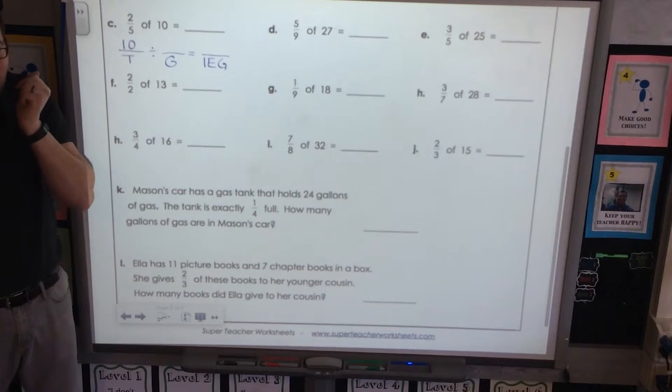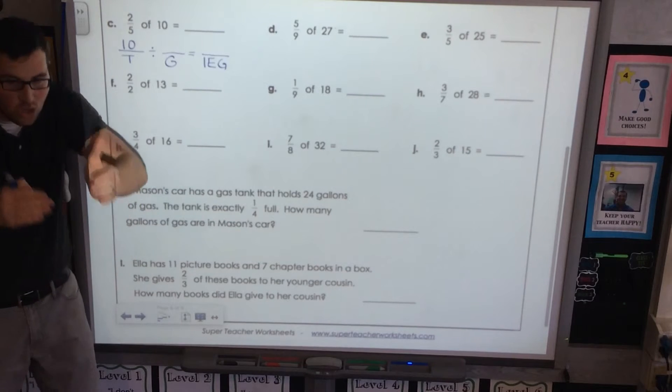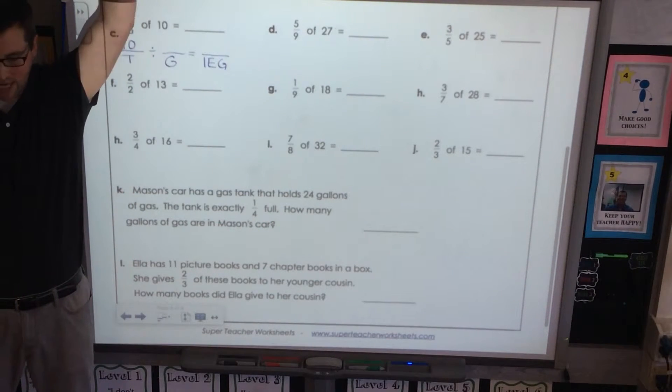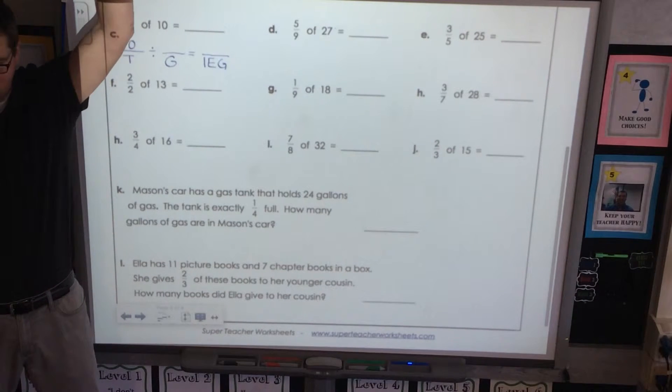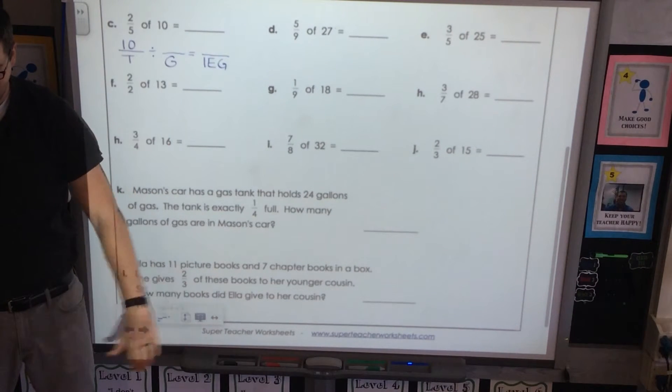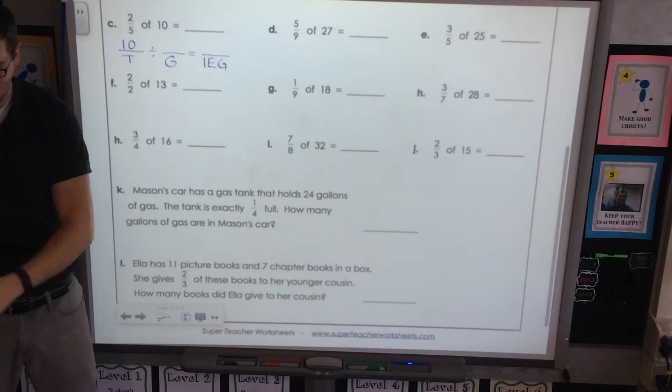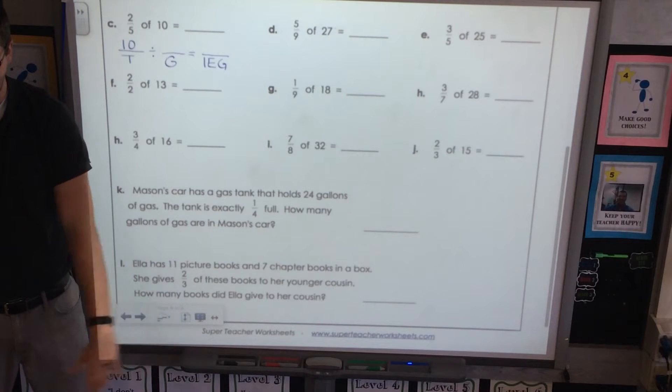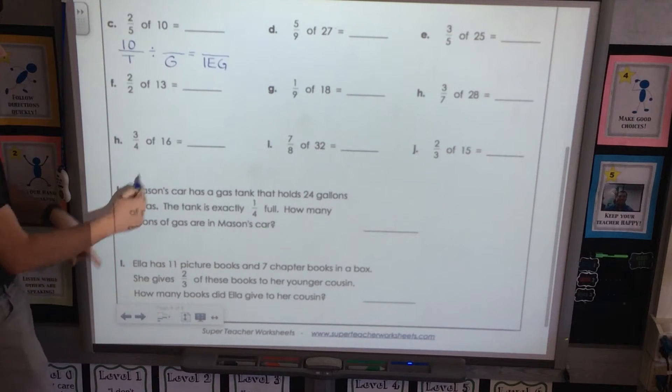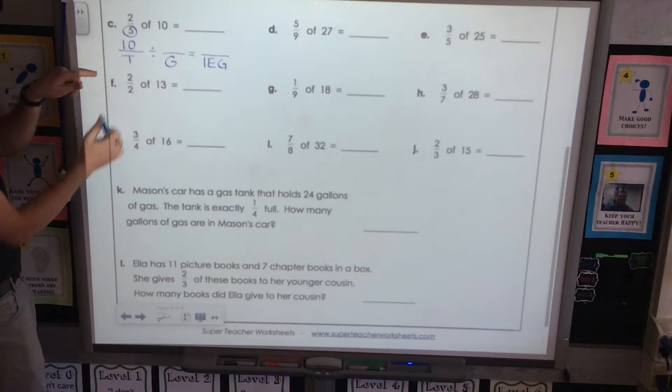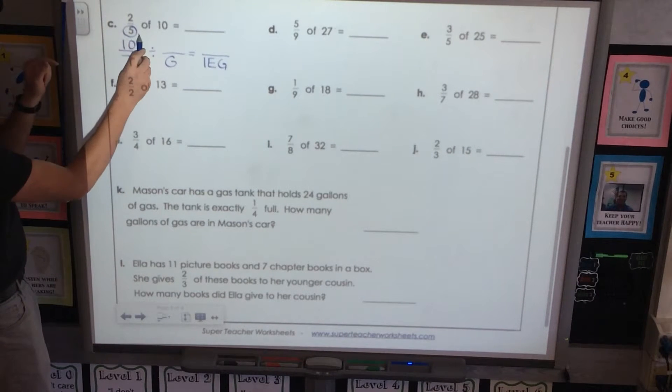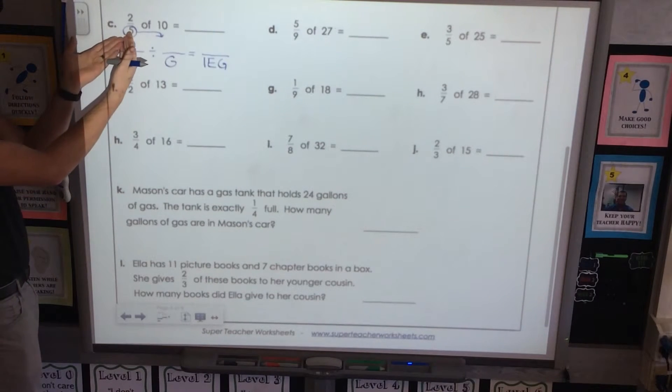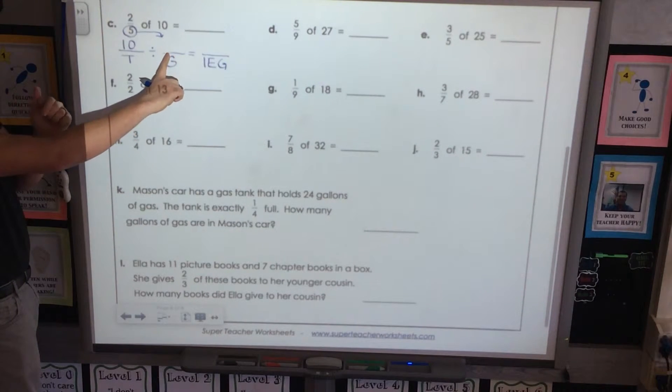Which part of the fraction tells you how many equal groups in the whole? Which part tells you? Who knows? Hands up if you know, hands down if you don't know. Chase, which part? Five. Which part tells you how many equal groups in the whole? The denominator. The denominator. The denominator. Man, you're good. Circle the denominator like you said. Okay. Draw this little arrow just as a visual of where does the denominator go? Right here. It tells us how many groups.